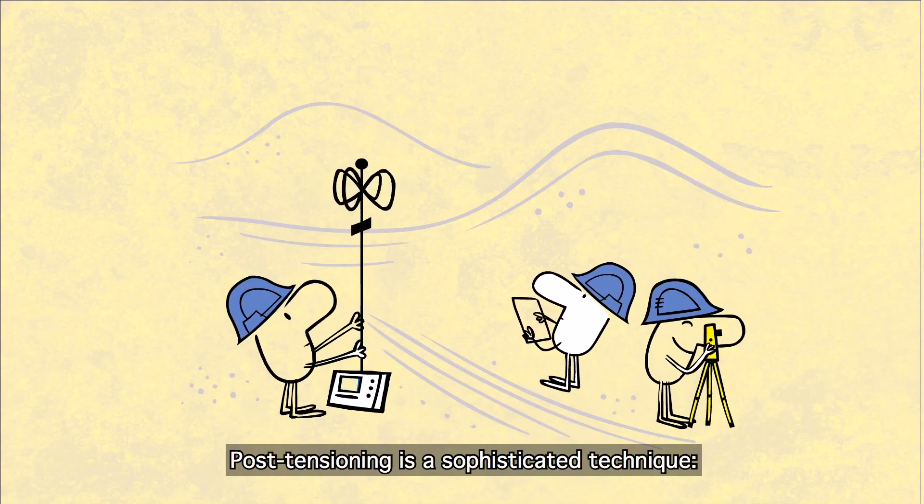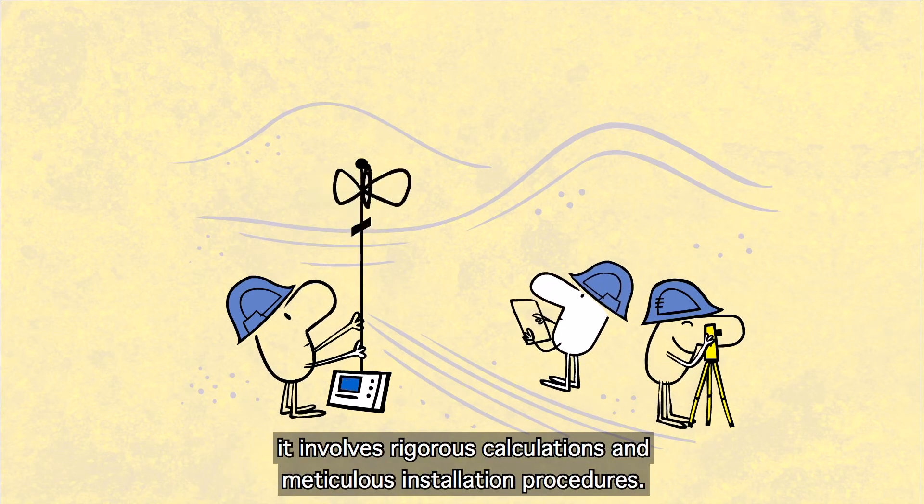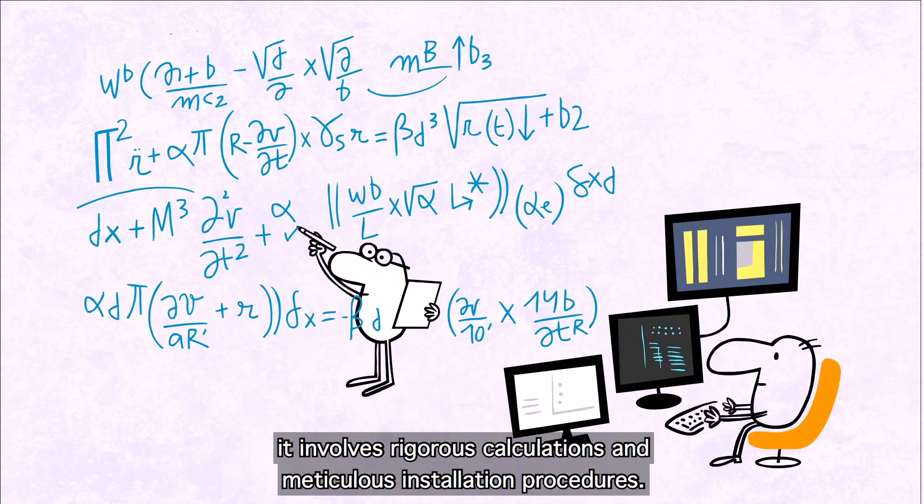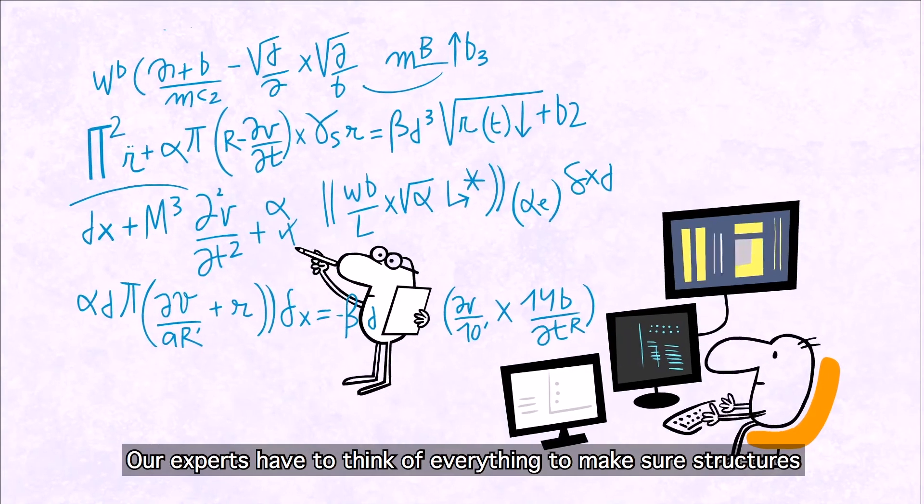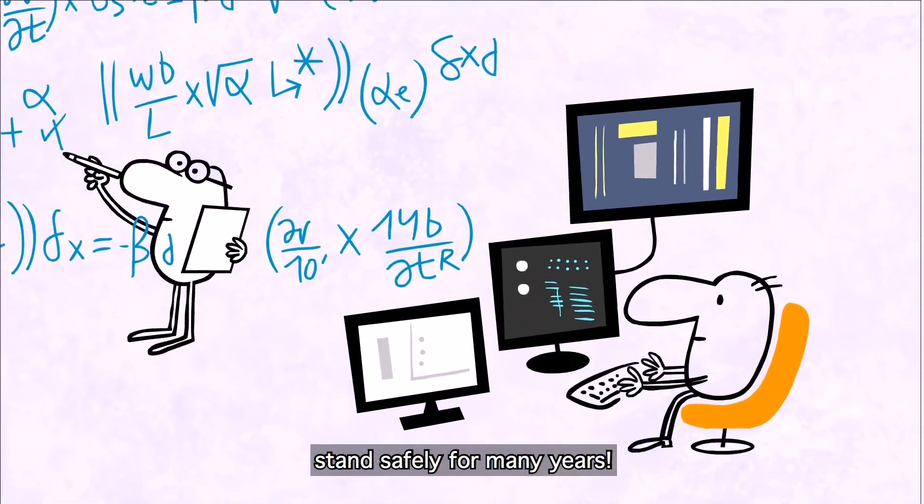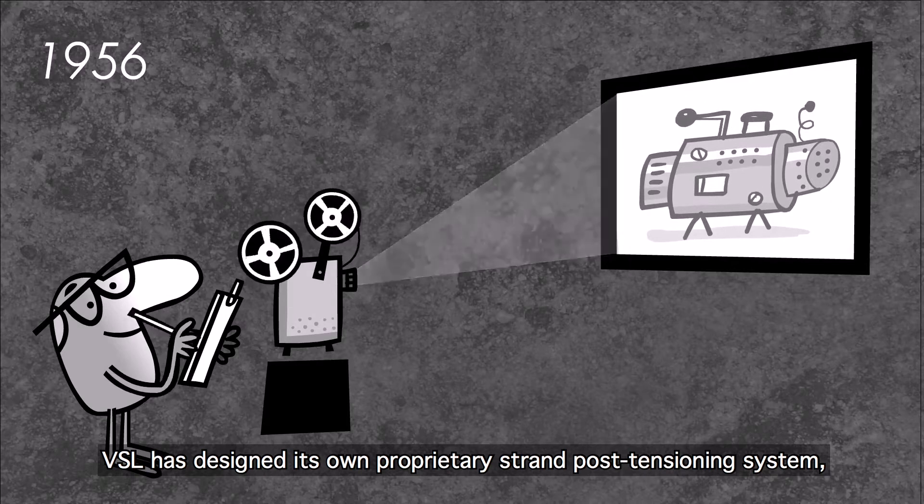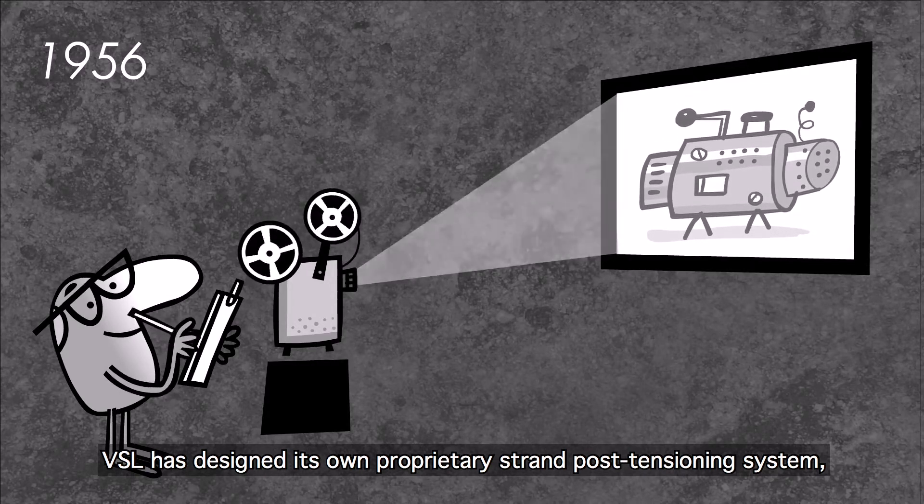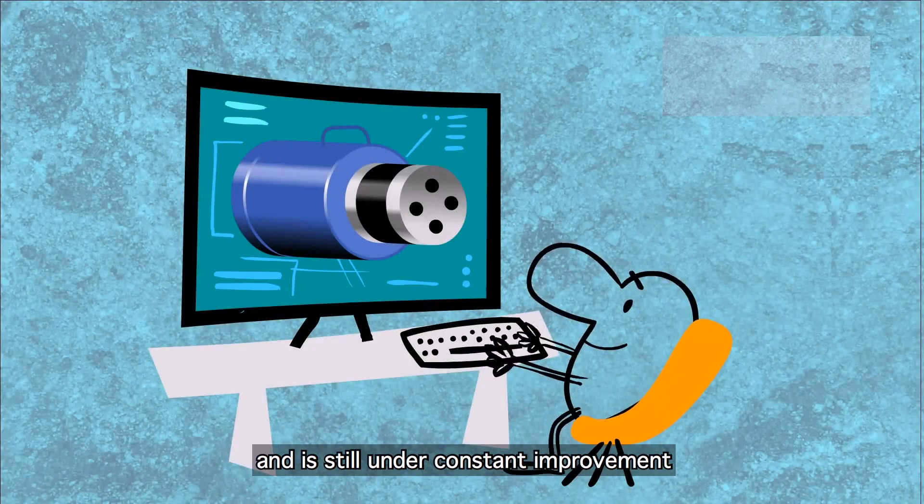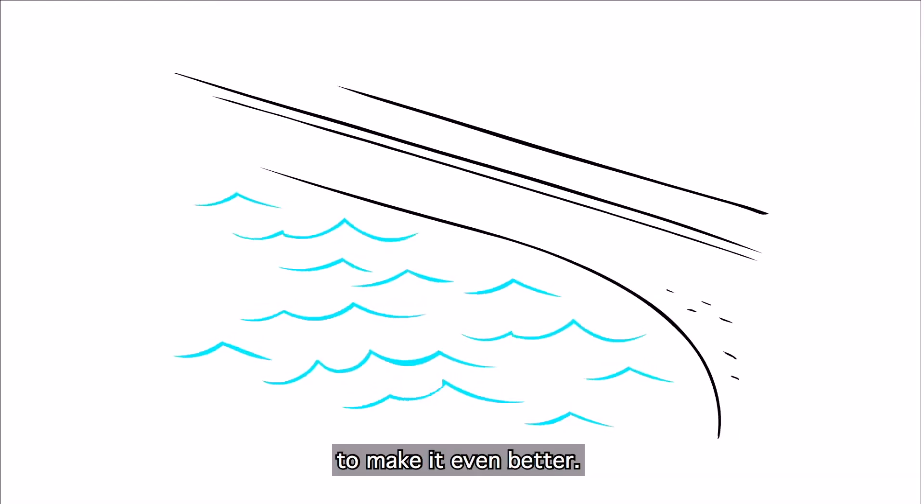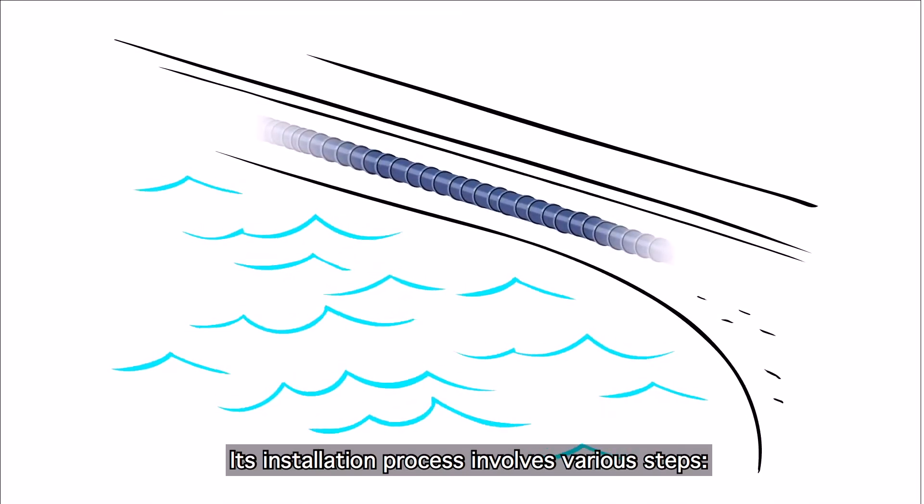Post-tensioning is a sophisticated technique. It involves rigorous calculations and meticulous installation procedures. Our experts have to think of everything to make sure structures stand safely for many years. VSL has designed its own proprietary strand post-tensioning system, which was developed in the 1950s and is still under constant improvement. Its installation process involves various steps.